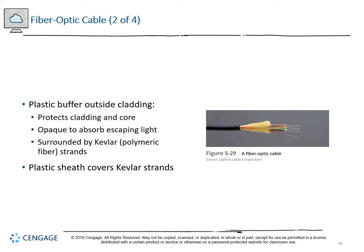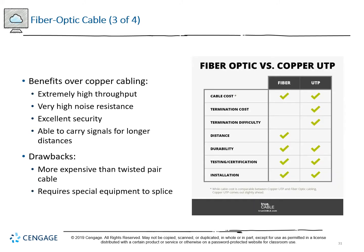Cladding may be opaque with a foil reflective liner or translucent with a high reflectivity index. A Kevlar wrap (polymeric strands, sometimes aramid) around the plastic buffer gives flex and toughness. Even then, fiber has a limited bend radius — the angle to which a cable can be bent and still transmit correctly — both to prevent damage and to avoid light pulses bouncing backwards toward the originator. Over copper cabling, fiber optic is extremely fast, has very high noise resistance, is very hard to break into providing great security, and can carry distances that put standard copper cable to shame. It is more expensive and difficult to splice.